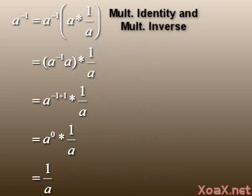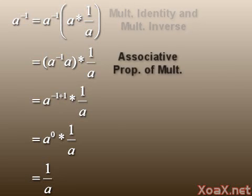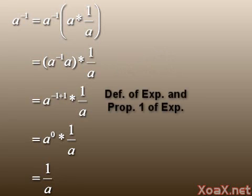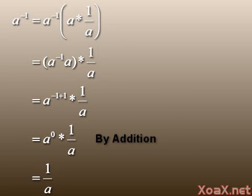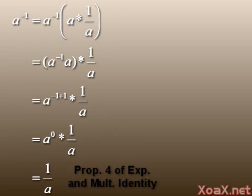Starting with a to the negative 1, we can multiply it by 1 again, which equals a times its inverse. Then we apply associativity to group the first two terms. Since a equals a to the 1, we have a to the negative 1 plus 1 by our first rule of exponents. This exponent, of course, equals 0, and a to the 0 is 1 by our last property.